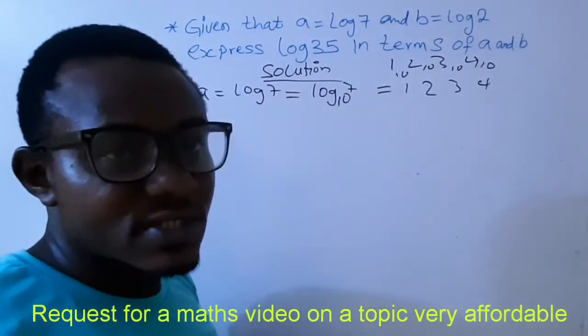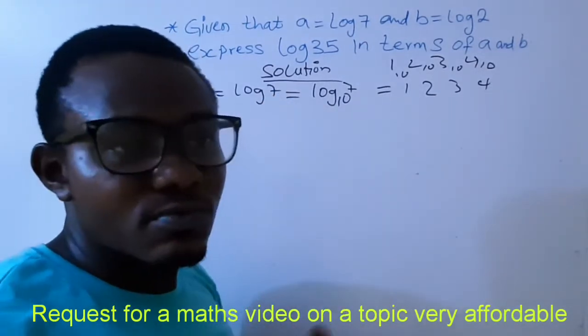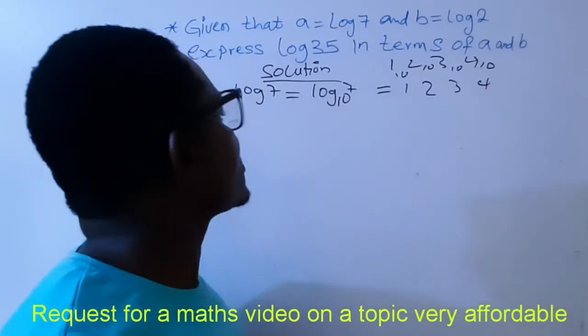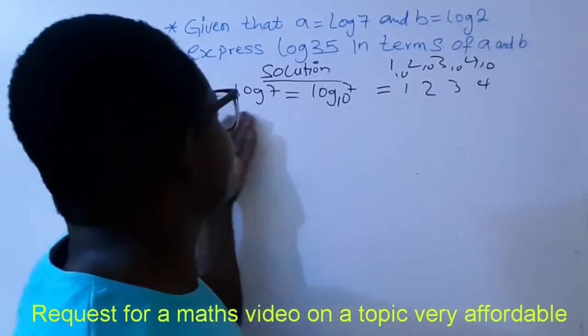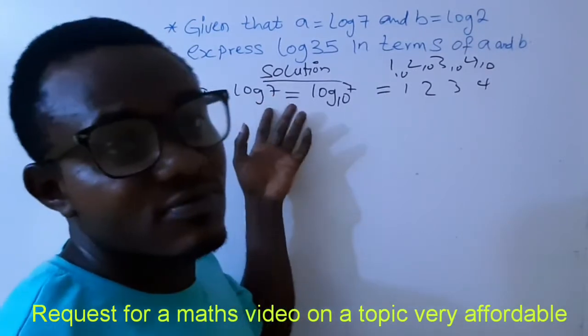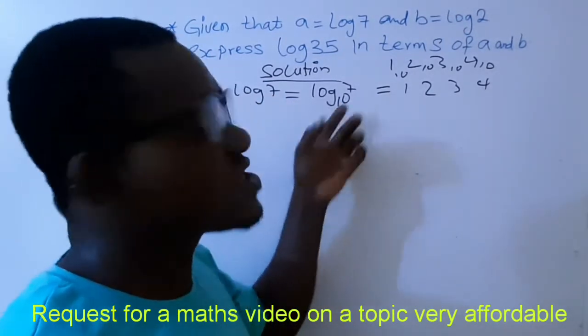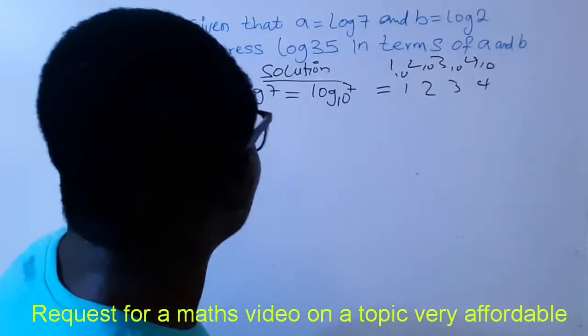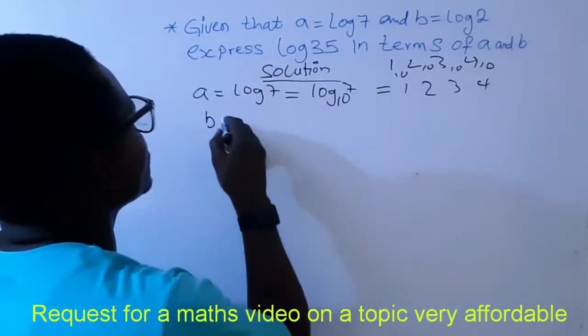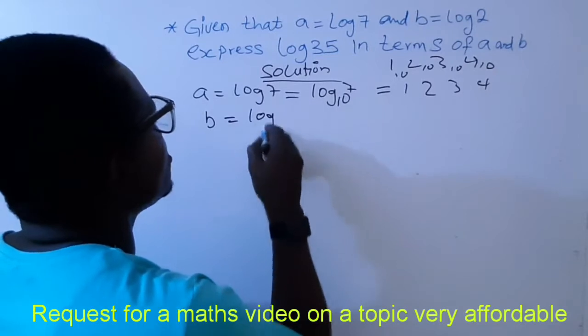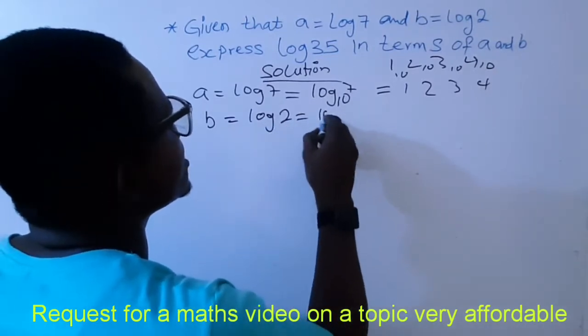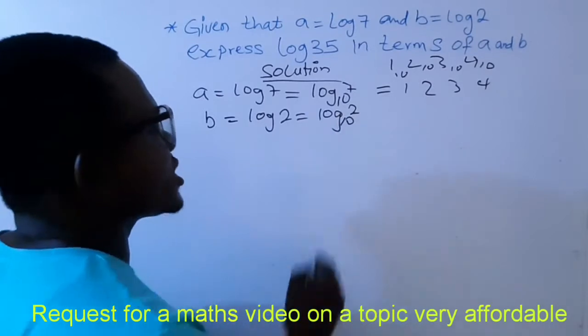That base 2, base 7, base anything. Now when you see it in this format, it means that log 7 is the same thing as log 7 base 10. So you can also write B to be equal to log 2, and you can also write it as log 2 base 10.